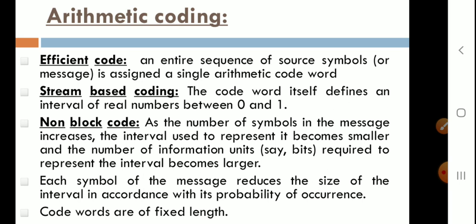The code word itself defines an interval of real numbers between 0 and 1. Arithmetic coding generates non-block codes because a one-to-one correspondence between the source symbol and the code words does not exist. Instead, the entire sequence of source symbols is assigned a single arithmetic code word, and that code word defines an interval of real numbers between 0 and 1.